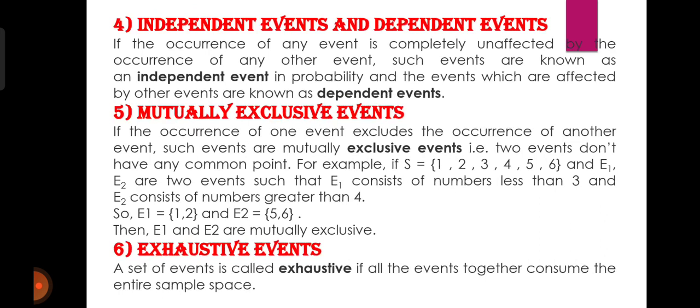Independent events and dependent events: if the occurrence of any event is completely unaffected by the occurrence of any other event, such events are known as independent events। यानि कि दो events occur हो रहे हैं और एक event के occur होने के chances दूसरे event के occur होने के chances पर depend नहीं कर रहे हैं, तो वो independent events हैं। और अगर दोनों events एक दूसरे को affect कर रहे हैं तो वो कहलाएंगी dependent events।